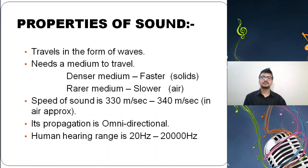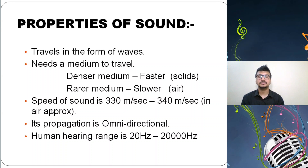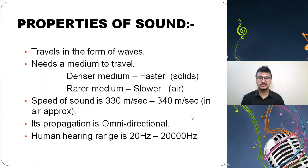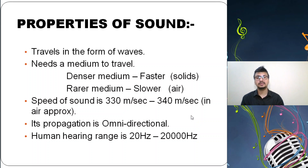The speed of sound is generally measured in meters per second. The speed of sound in air ranges from approximately 330 to 340 meters per second. When you change the medium — such as water or gel — the speed of sound changes. Specifically in air, it is approximately 330 to 340 meters per second.